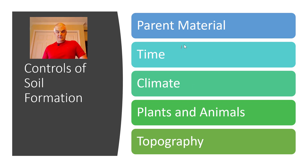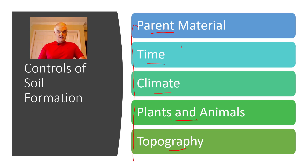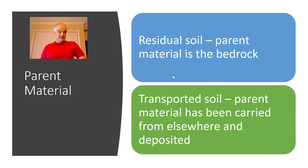It comes down to five topics: the parent material it comes from, how much time it takes, what climate it's in, how the plants and animals interact with the soil, and the topography — that's like elevations and stuff like that. So let's look at one at a time.